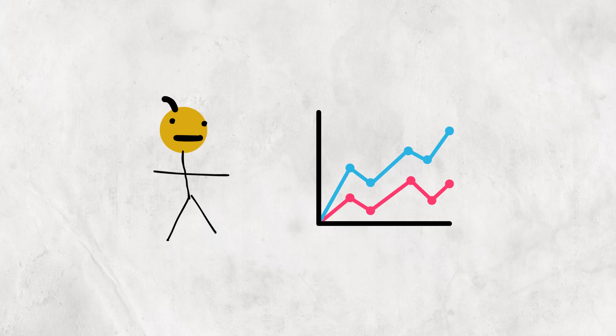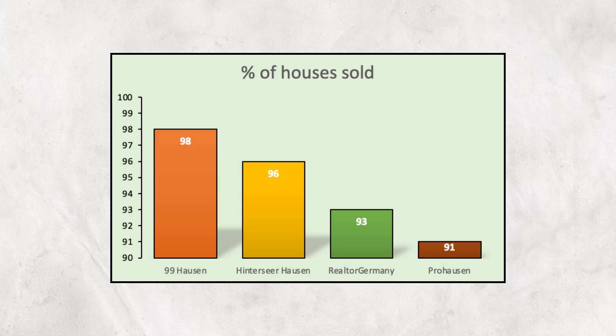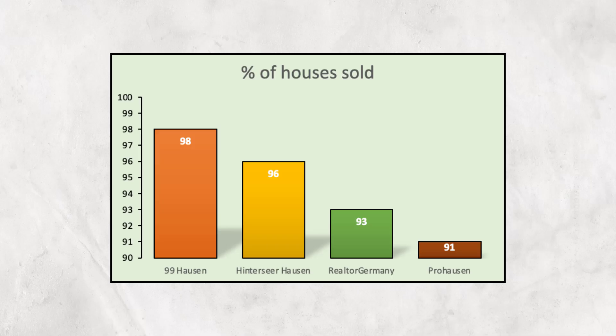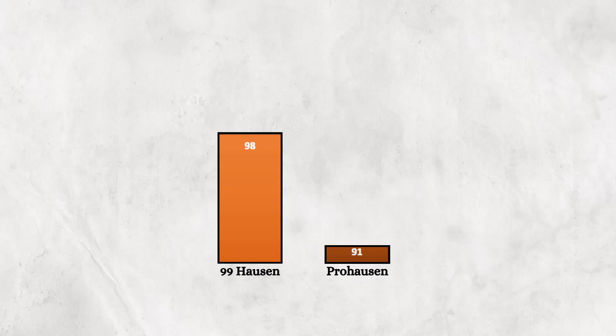Another way that graphs can seem misleading could be in the way that they're presented. Take this imagined example from a realtor in a German city, showing their success in comparison to their competitors. We get the impression that Neunzig Hausen is many times better than Pro Hausen. More precisely, seven times better, because we think the size of the bars are proportional to the values.